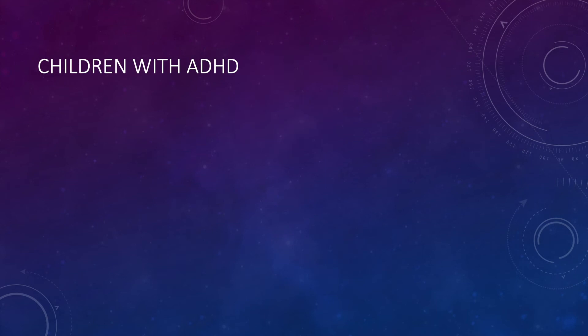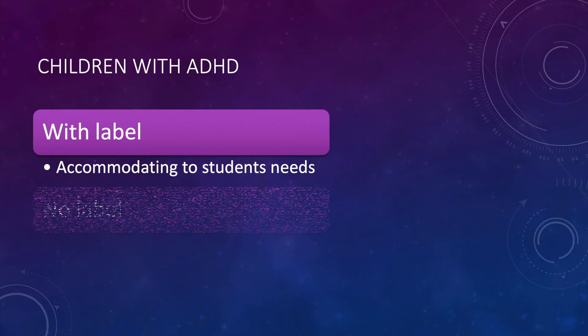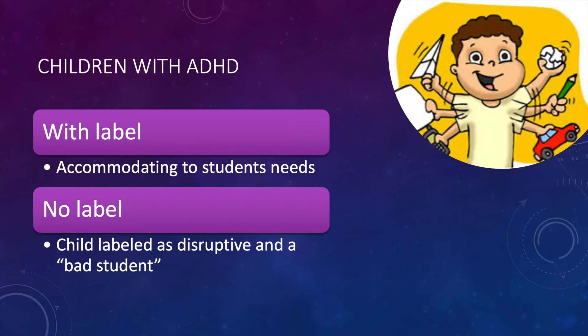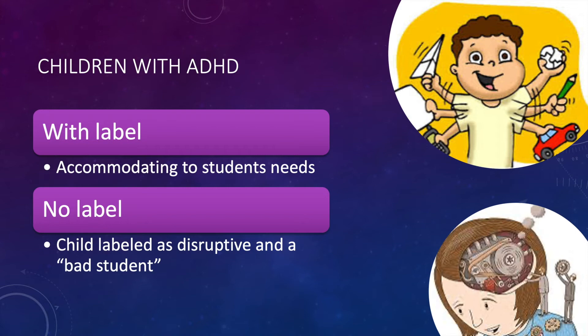For example, a girl diagnosed with ADHD will have different experiences in the classroom, as the teacher will be more accommodating to the student's needs. In the past, before there was a label for ADHD, students were labeled as disruptive because they were not able to stop fidgeting or pay attention for long periods of time. Teachers were not aware that the student had ADHD, and therefore made no accommodations, but saw the girl as a bad student.